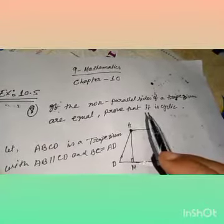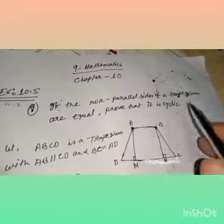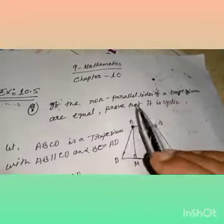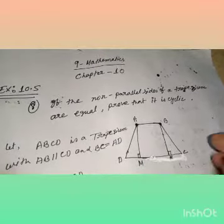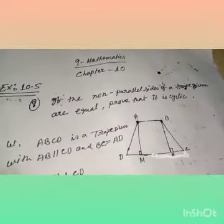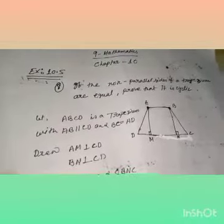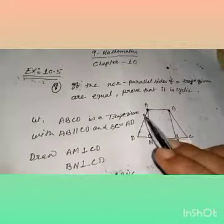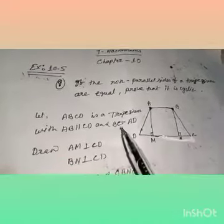All of you know what a trapezium is — one pair of opposite sides is parallel. So if the non-parallel sides are equal, you need to show that it is cyclic. Cyclic means the sum of opposite angles is 180 degrees, then you can say it is cyclic — in the case of a quadrilateral. So let ABCD be a trapezium with AB parallel to CD, and the non-parallel sides AD and BC. According to the question, the non-parallel sides are equal, so BC is equal to AD.